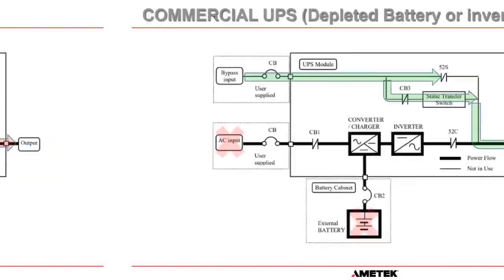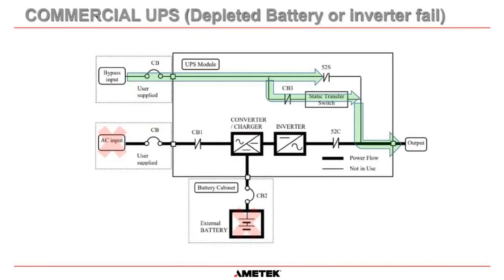As the battery depletes and drops below a certain voltage, the battery is disconnected and the inverter turns off. The static transfer switch then turns on, allowing power from the bypass to supply the loads. The static transfer switch sees that the inverter output has failed and automatically transfers to bypass without any issues to the load circuits.